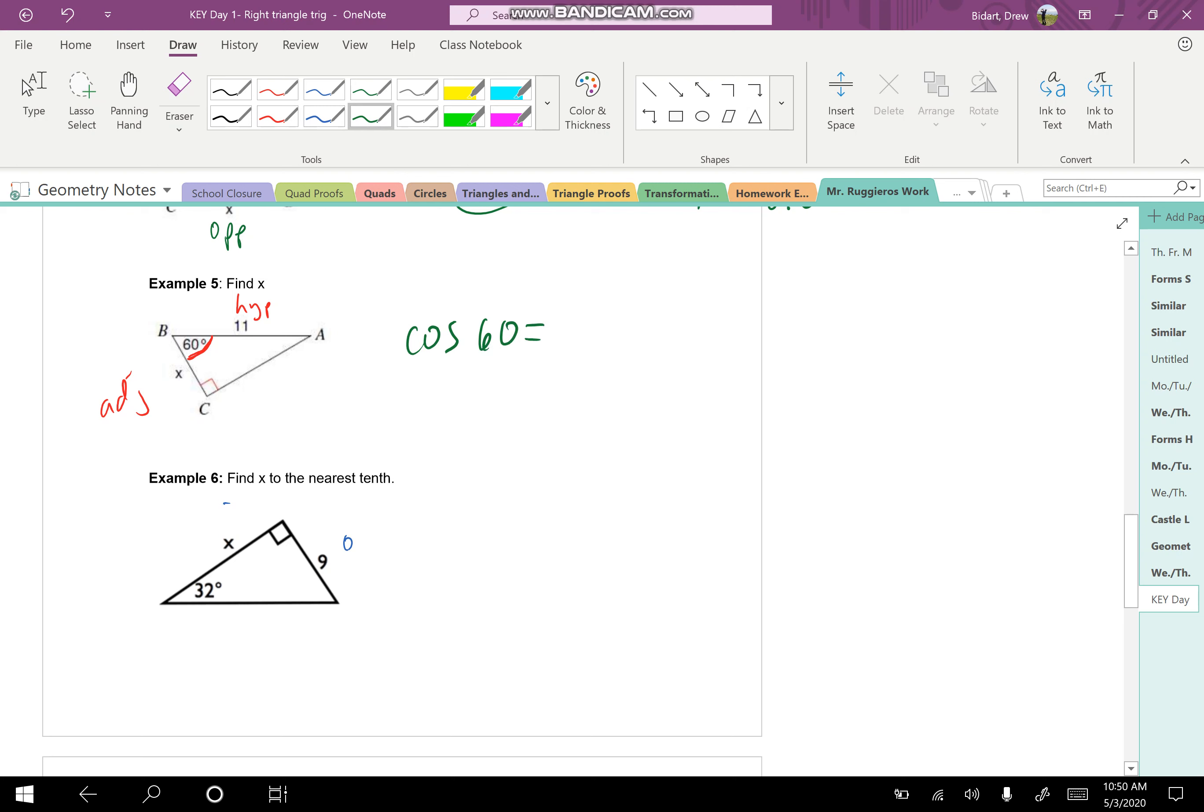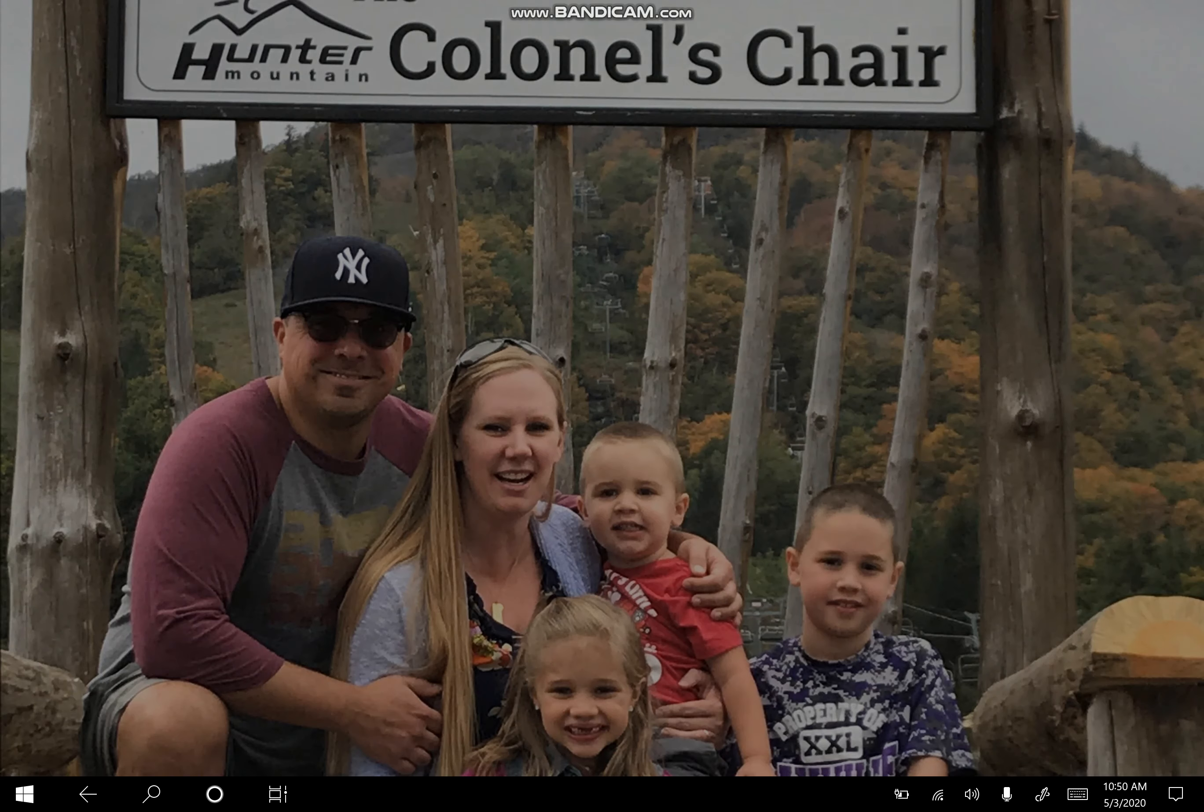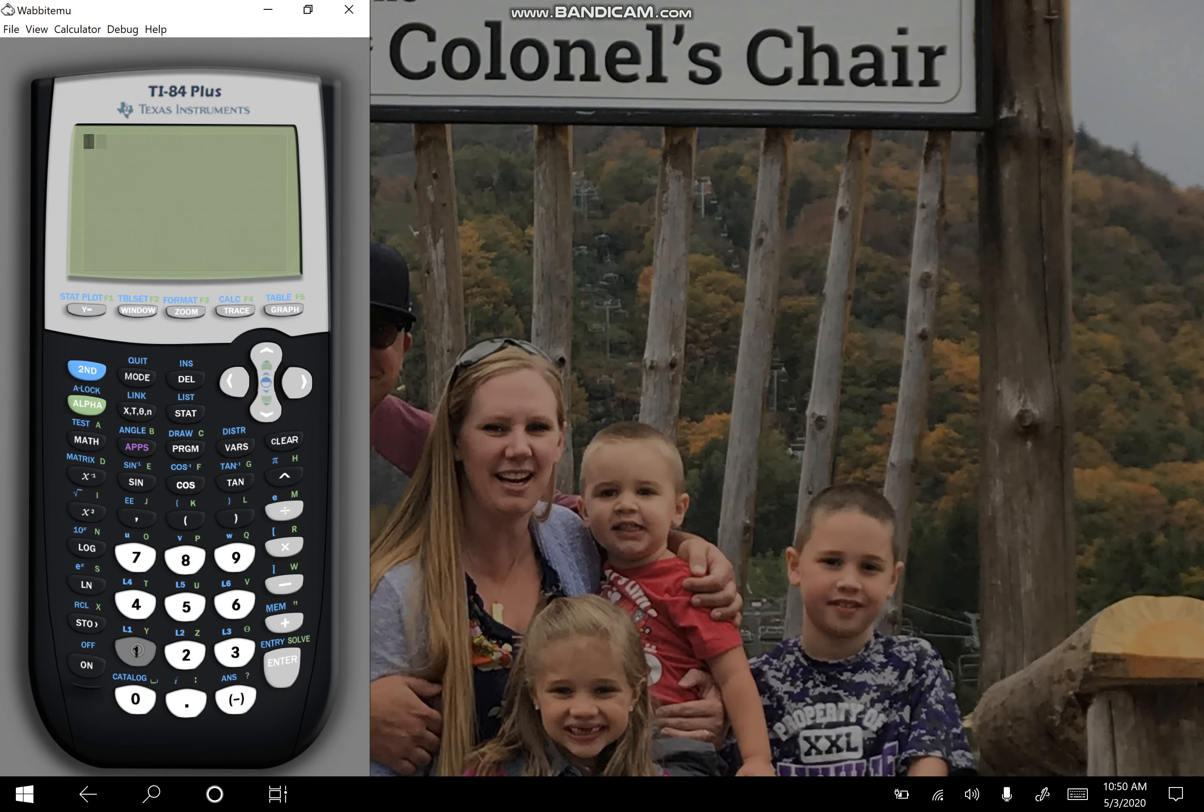So we write this as the cosine of 60 is equal to the adjacent over the hypotenuse. When I cross multiply, you get x equals 11 cos 60.